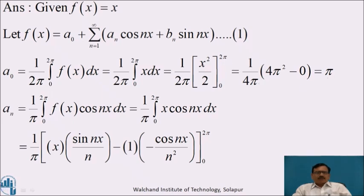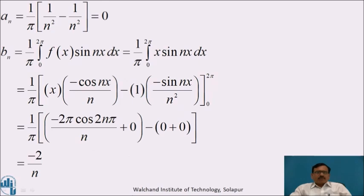Similarly, aₙ = (1/π) ∫₀^(2π) x cos nx dx. Applying integration by parts: x · sin nx/n − ∫sin nx/n dx = x · sin nx/n + cos nx/n², evaluated from 0 to 2π. Since sin 2nπ = 0 and cos 2nπ = 1, cos 0 = 1, the upper and lower limit terms cancel, giving aₙ = 0.